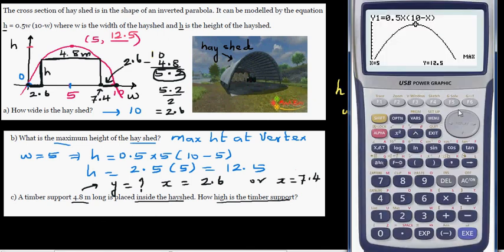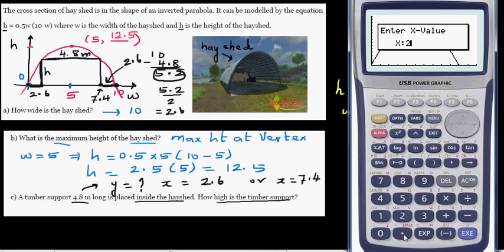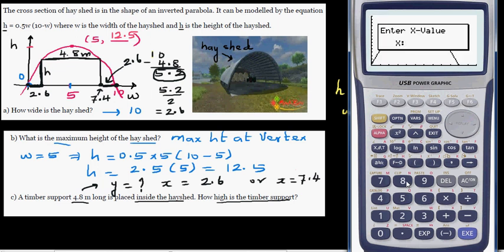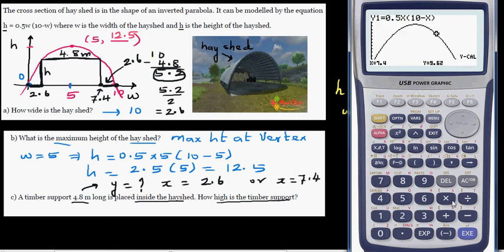You can go G-solve, and when we want to find Y when X is 2.6, the height is 9.62. And if you want to confirm, you can find Y when X is 7.4. That's also 9.62.